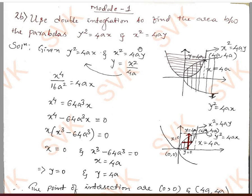Before sketching the graph, find the point of intersection by using the given curves. The given curves are y² = 4ax and x² = 4ay.